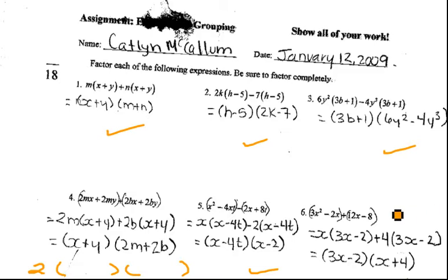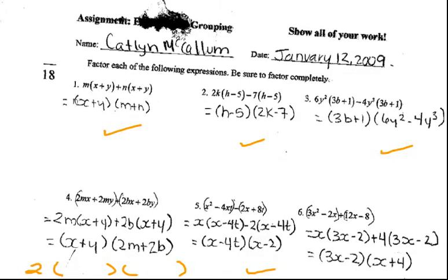Caitlin, this is your factoring by grouping assignment. You submitted two of these to me. The first one that you did, you know that we weren't really sure what we were doing there.